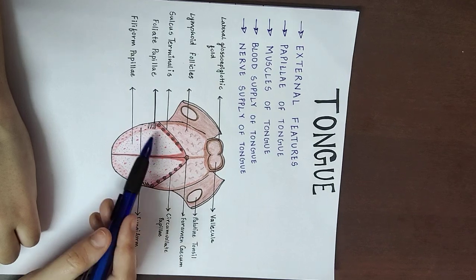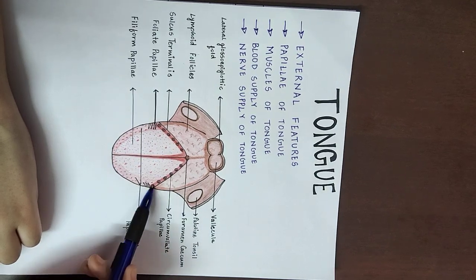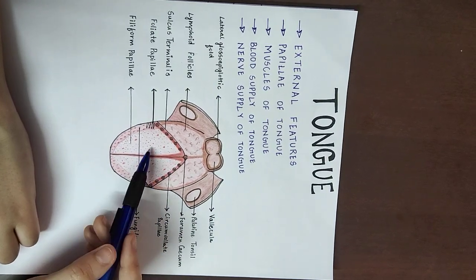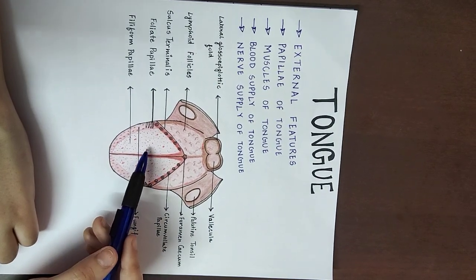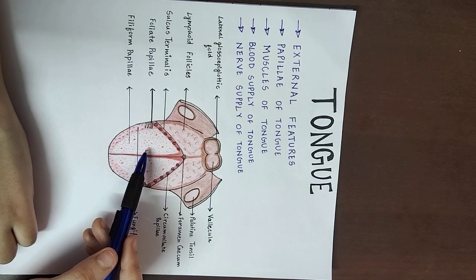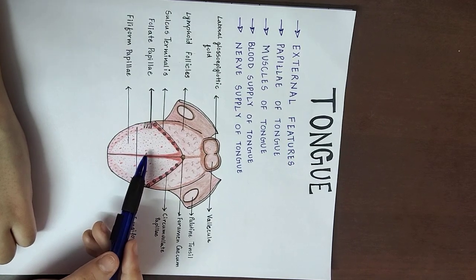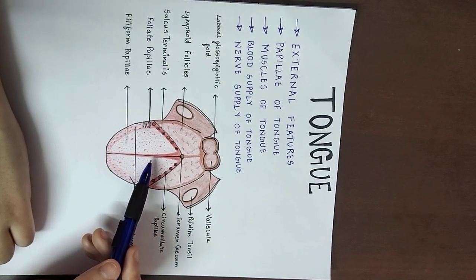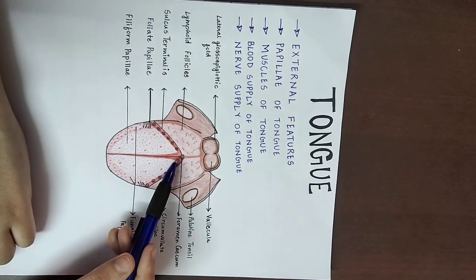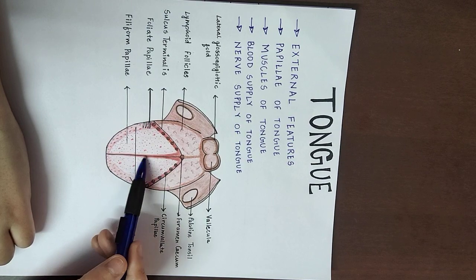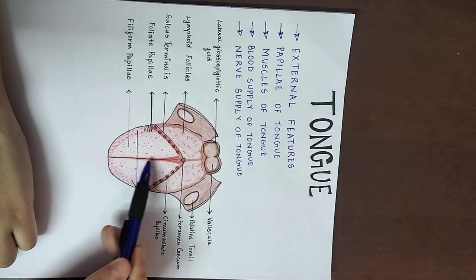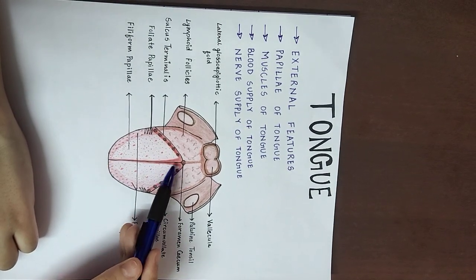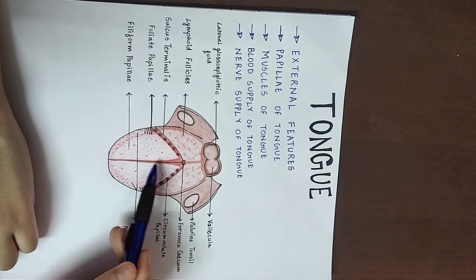If we look at the oral part, there are papillae and taste buds present, along with teeth and gums. Most importantly, there is a median furrow present which divides the tongue into the right and left parts.